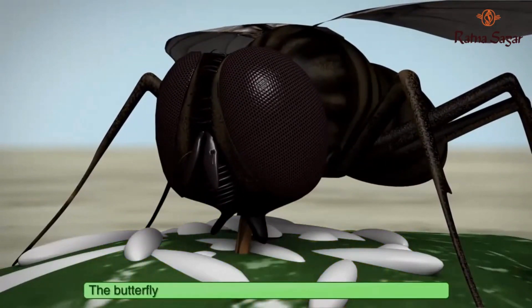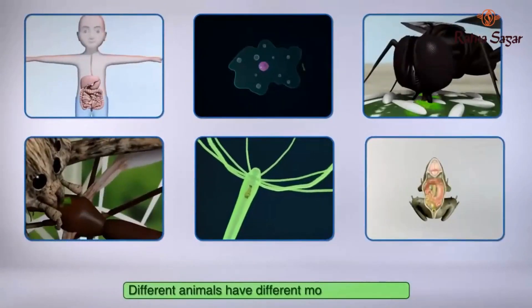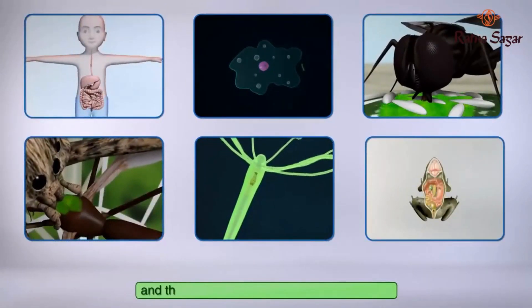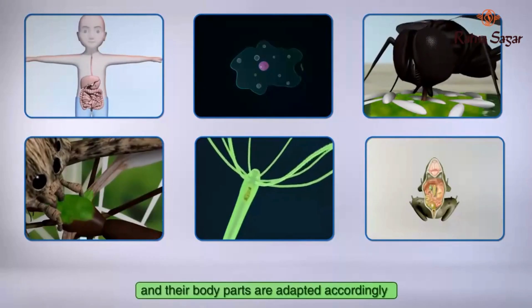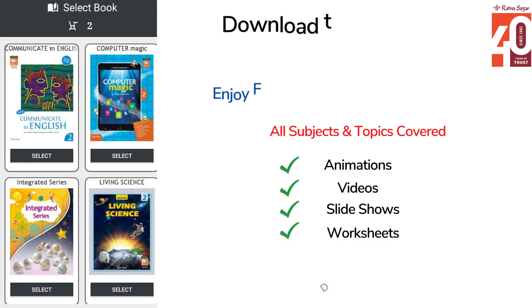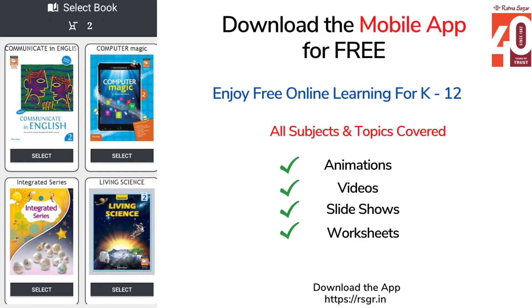The butterfly also uses its proboscis to suck nectar from flowers. Different animals have different modes of nutrition and their body parts are adapted accordingly.